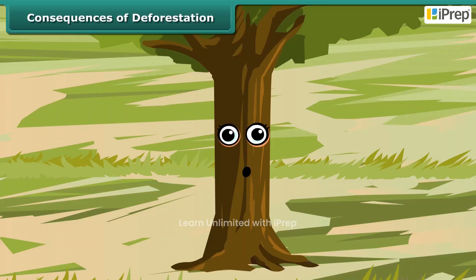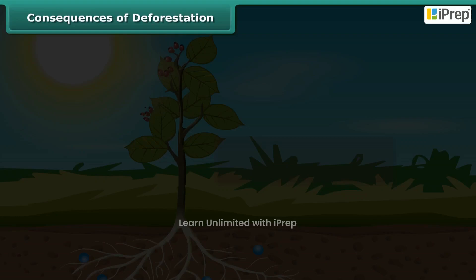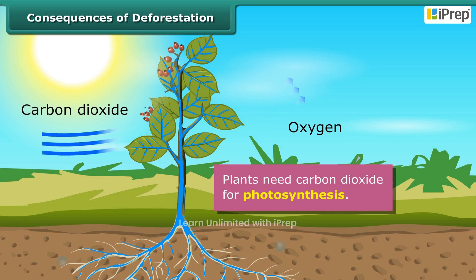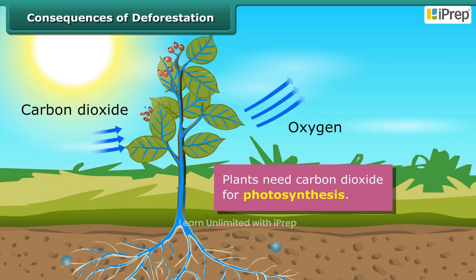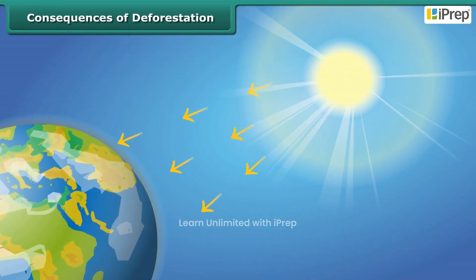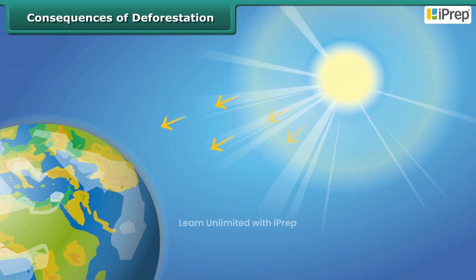You have already studied about deforestation and its various causes. Now let us discuss some of its consequences. Plants need carbon dioxide for photosynthesis. Fewer trees would mean that less carbon dioxide would be used up, resulting in its increased amount in the atmosphere. This will lead to global warming, as carbon dioxide traps the heat rays reflected by the earth.